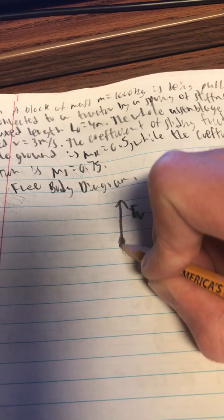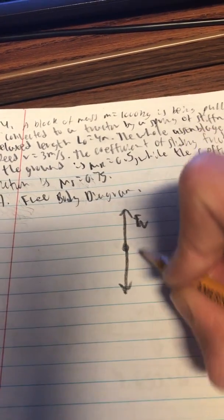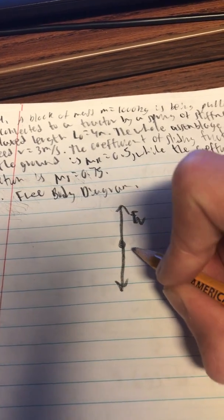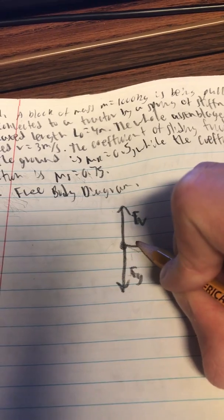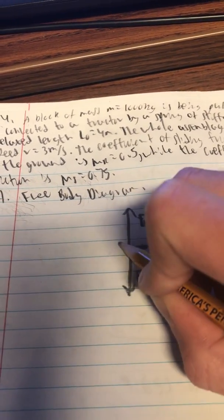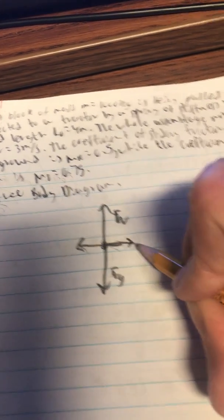The normal force is going to be equal to the force of gravity and the force applied by the tractor is going to be equal to the force of friction.